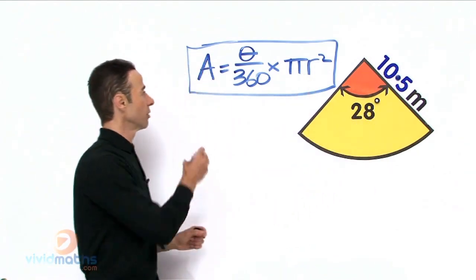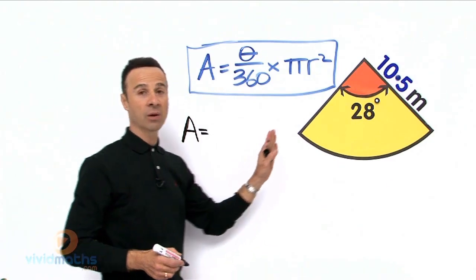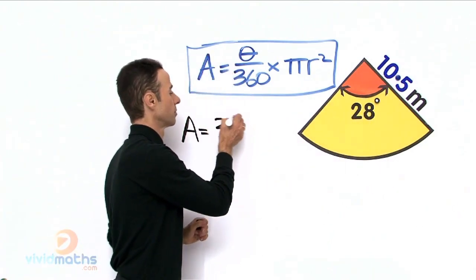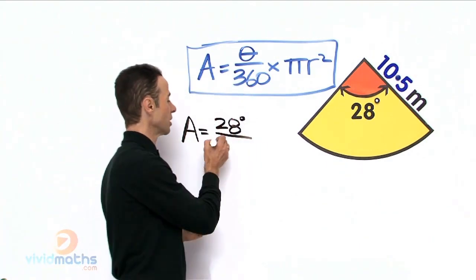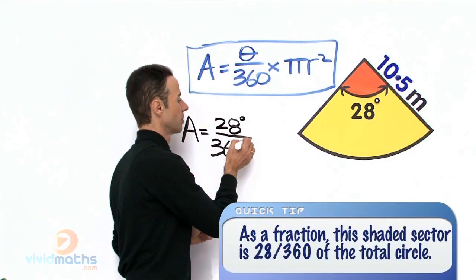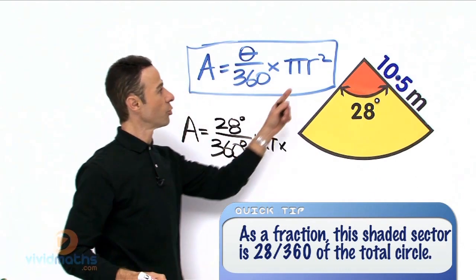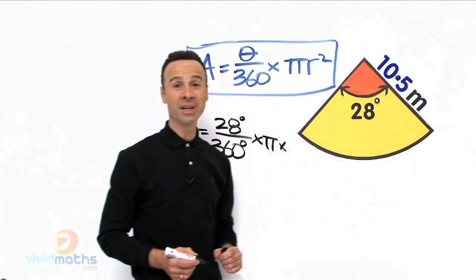So area of the whole shaded region is theta, which is the angle component. The angle component we have is 28 degrees all over the full component, which is 360, times pi times—now the radius is given here as 10.5 meters. That is pretty big.